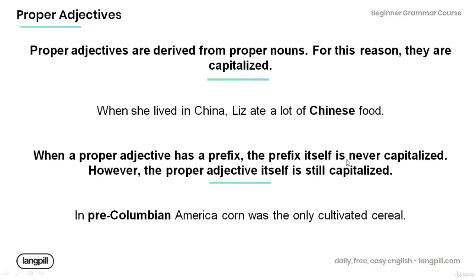When a proper adjective has a prefix, the prefix itself is never capitalized; however, the proper adjective itself is still capitalized. For example, in 'pre-Columbian America, corn was the only cultivated cereal,' the prefix 'pre' is not capitalized, but the proper adjective 'Columbian' is capitalized.